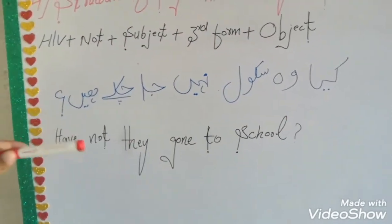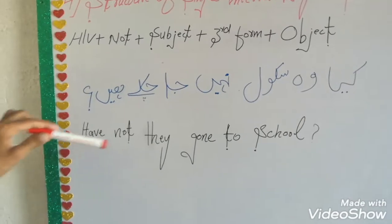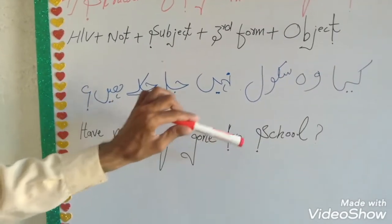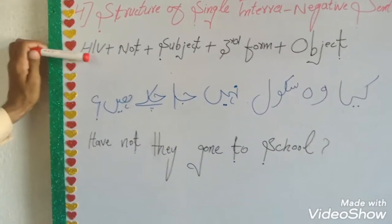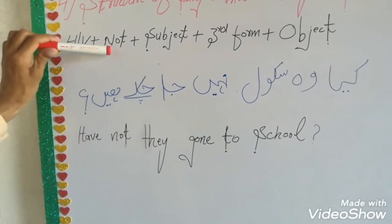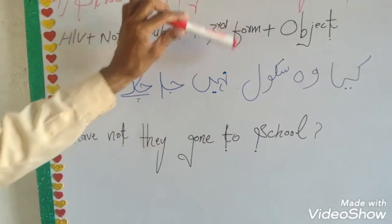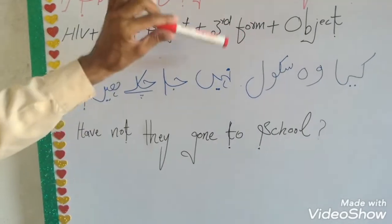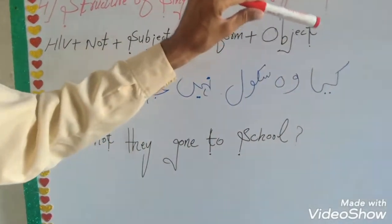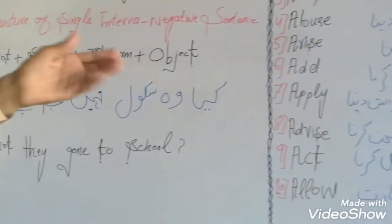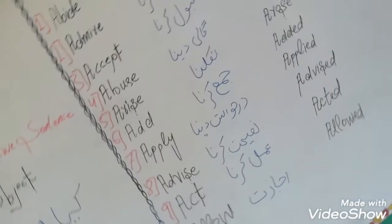'Have not they gone to school?' 'Has' is the helping word in this sentence, 'not' according to the formula, 'they' is the subject, 'gone' is the third form, 'to' is a preposition, and 'school' is an object.